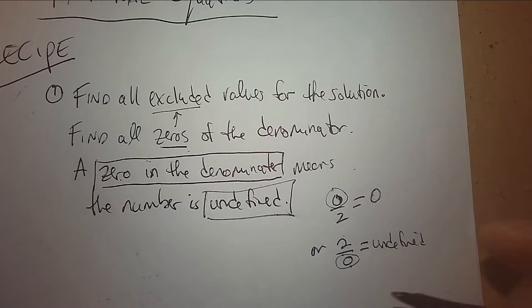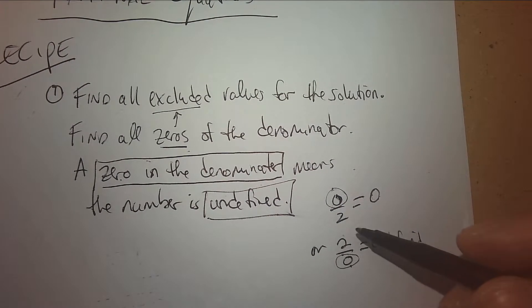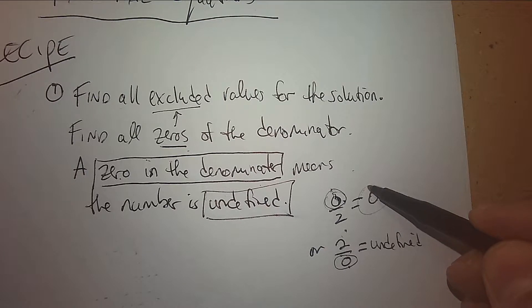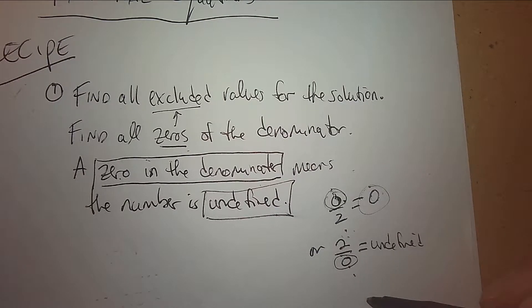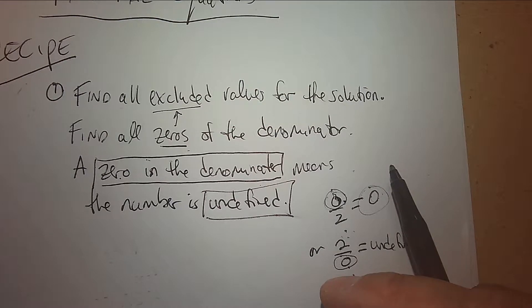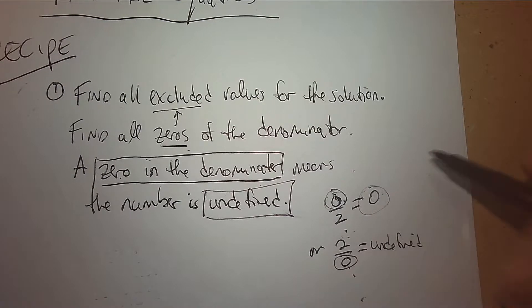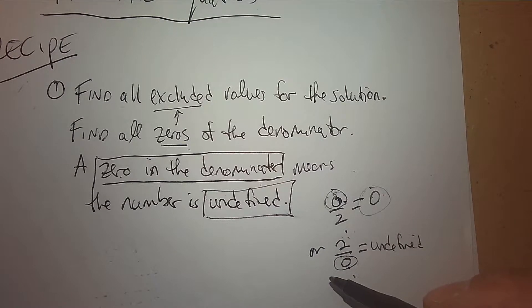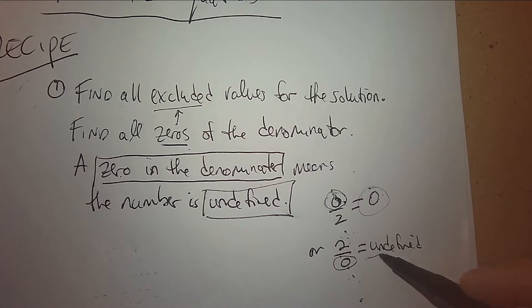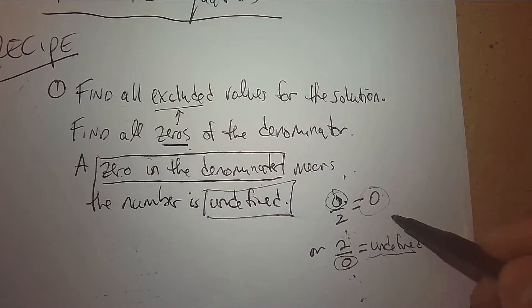When you're dividing, you're saying to yourself: how many of the numerator are in the denominator? How many zeros are in two? The answer is zero. But the other way around — how many twos are in zero — makes no sense. Zero represents nothing, and yet it's something. It's impossible to understand how many twos are in nothing. So two divided by zero is undefined, but zero divided by two is zero.